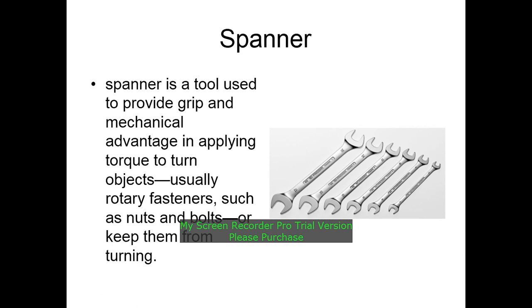A spanner is a tool used to provide grip and mechanical advantage to turn an object — usually rotary fasteners such as nuts and bolts — and to keep them from turning.